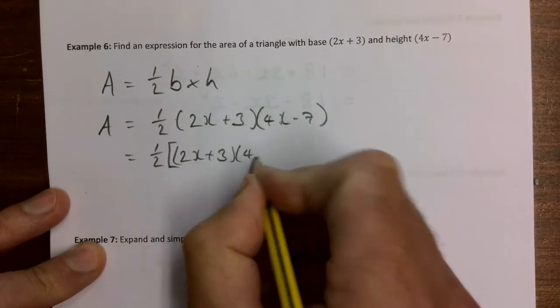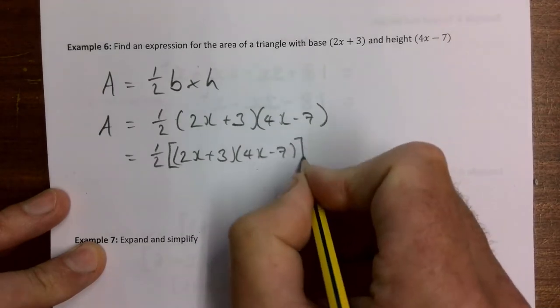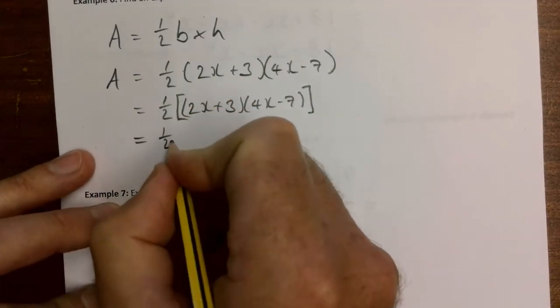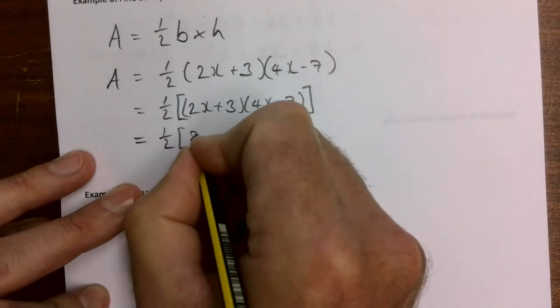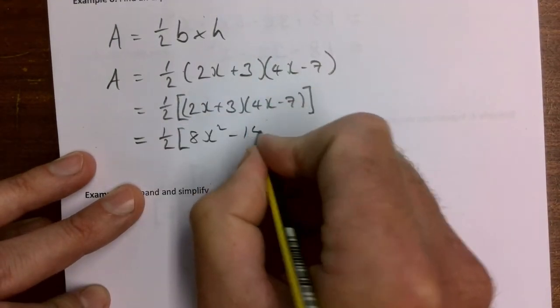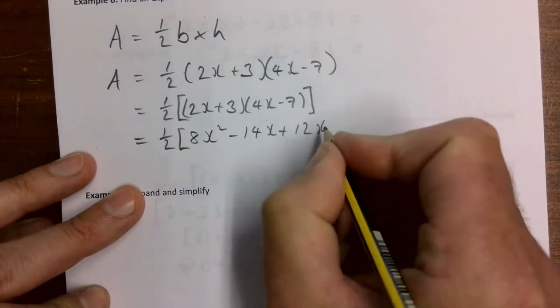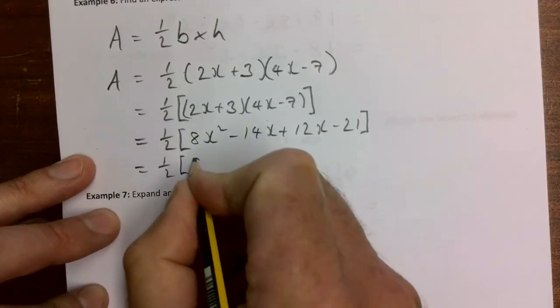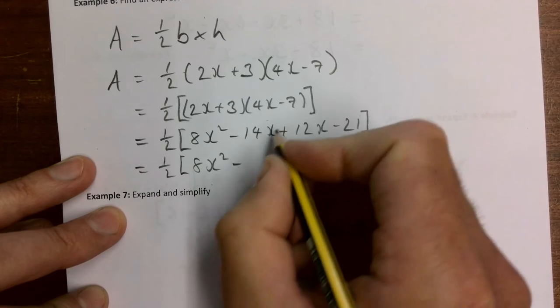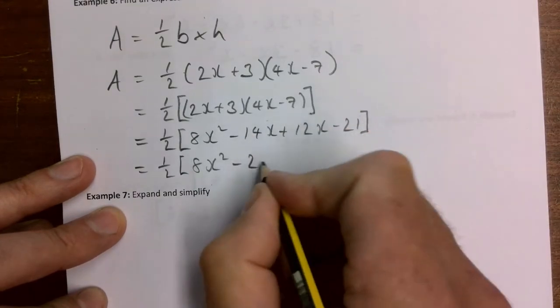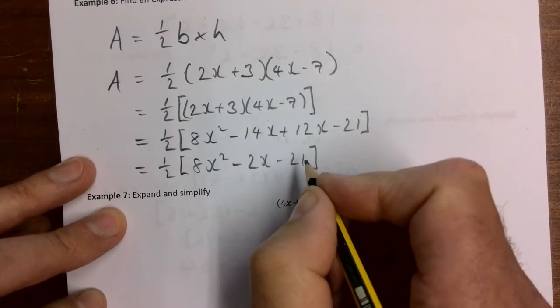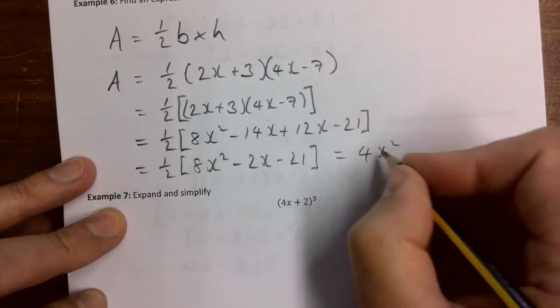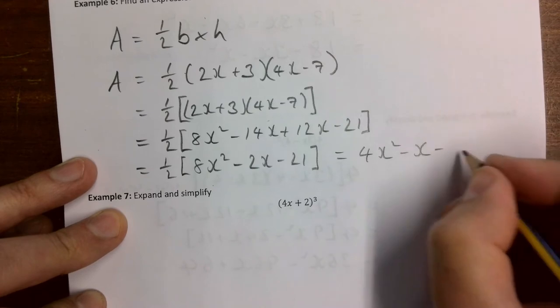You can see I'm doing it the same way as one of our previous examples. You don't need the square bracket, but it's just so I can see what's going on here. 2x times 4x gives me 8x squared, minus 14x plus 12x minus 21. Almost there. A half times 8x squared, what's that going to be? Minus 14 plus 12, so that's minus 2x minus 21. And we are going to tidy that up to give us 4x squared, because multiply by the half, minus x minus 10 and a half.